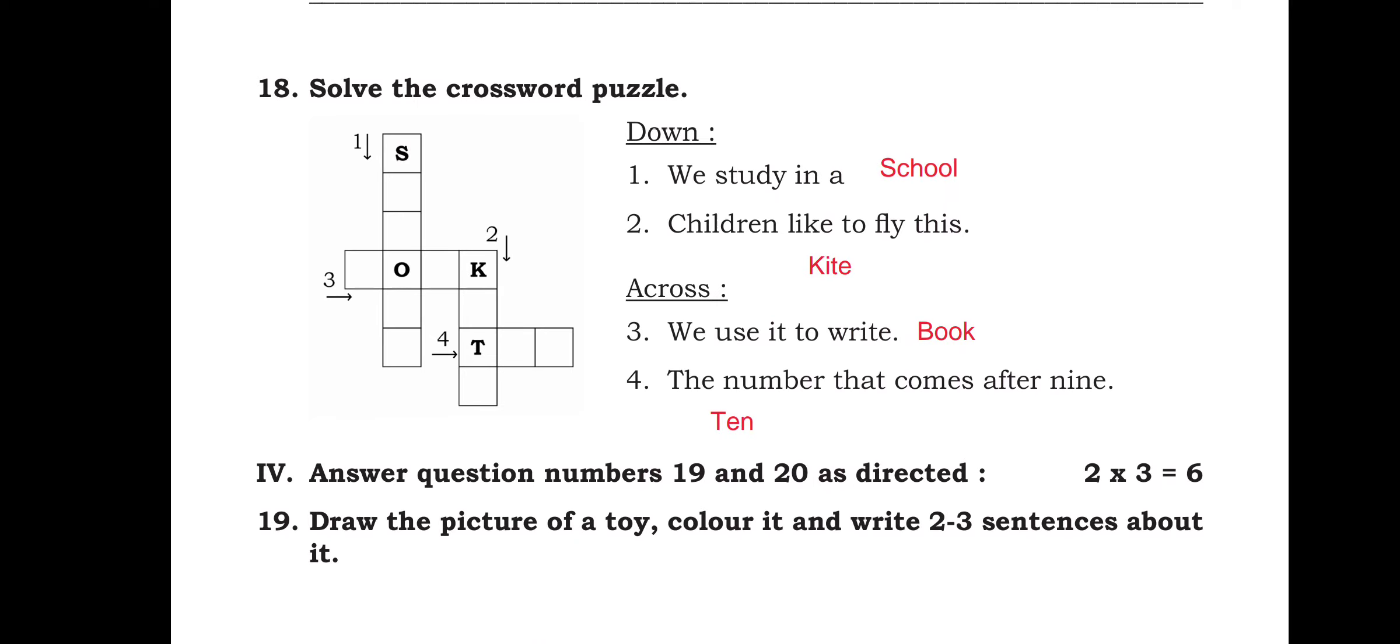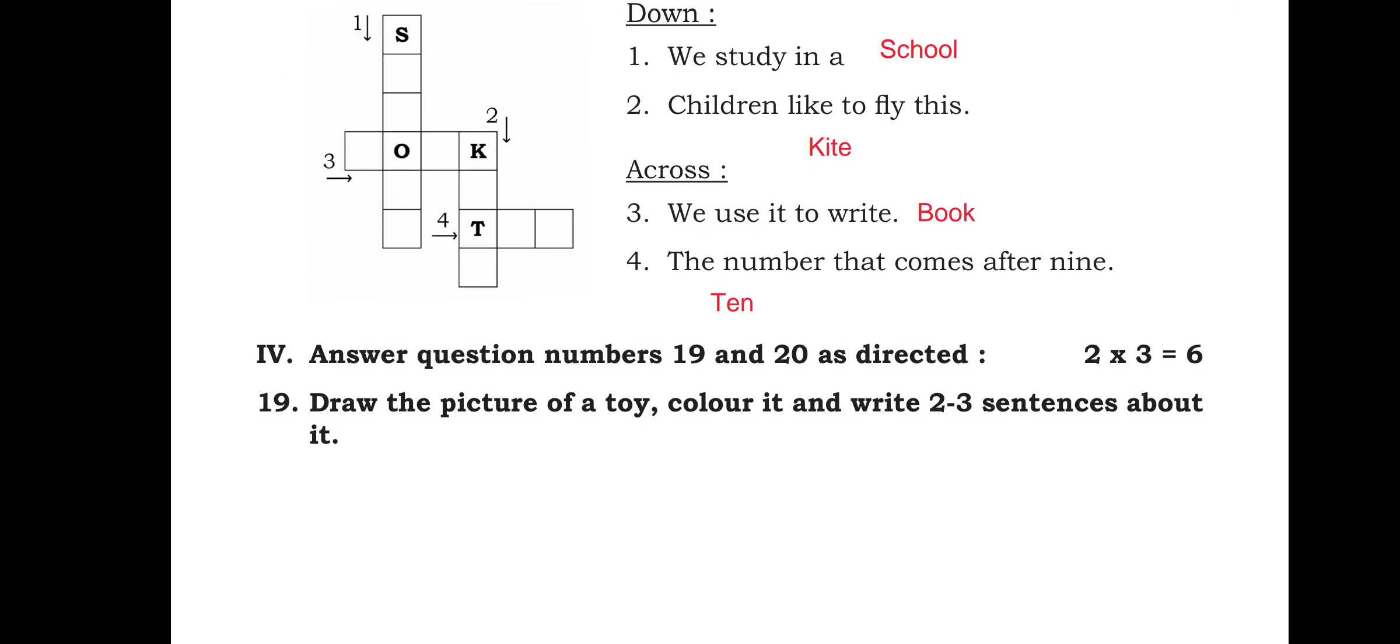Solve the crossword puzzle. So when you go down, we study in a school. The children like to fly this, so that is a kite. When you come across from number 3, we use it to write book. The number that comes after 9, it is 10.